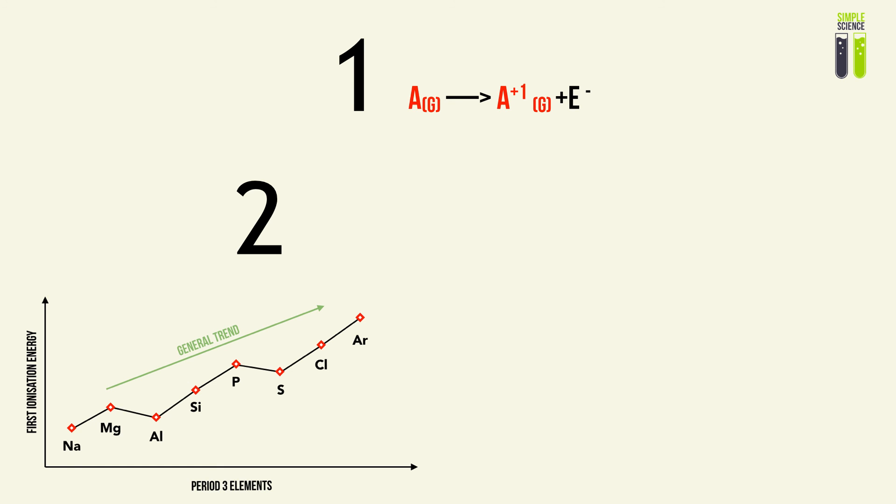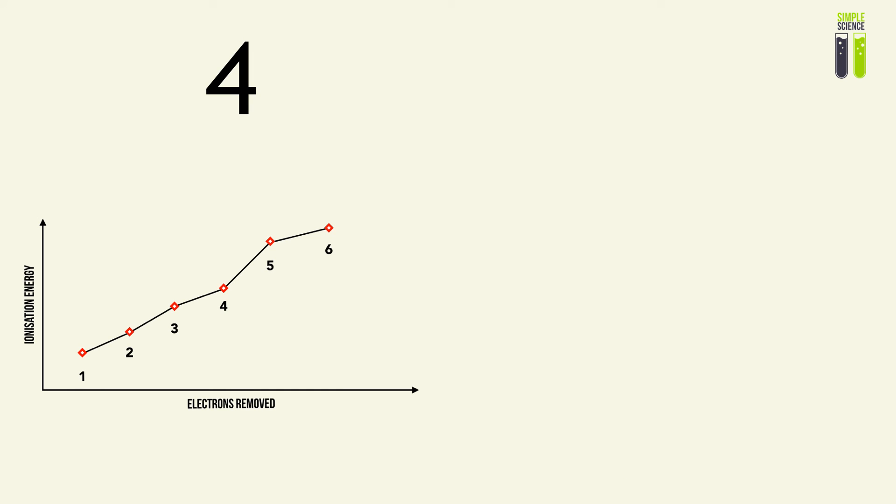Second, across the period there is going to be a general trend of increase in first ionization energy. As you go down the group there will be a general trend of a decrease in first ionization energy. As you remove more electrons the ionization energies will increase.